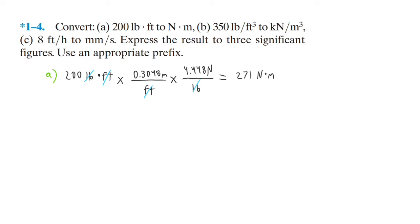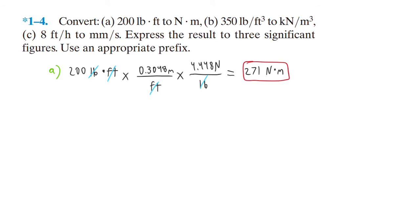For part B, we have 350 pounds per foot cubed. Again, for every foot there's 0.3048 meters.